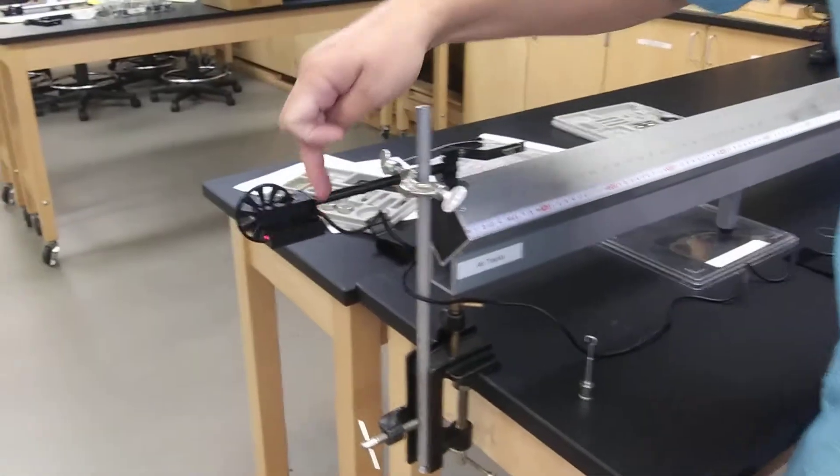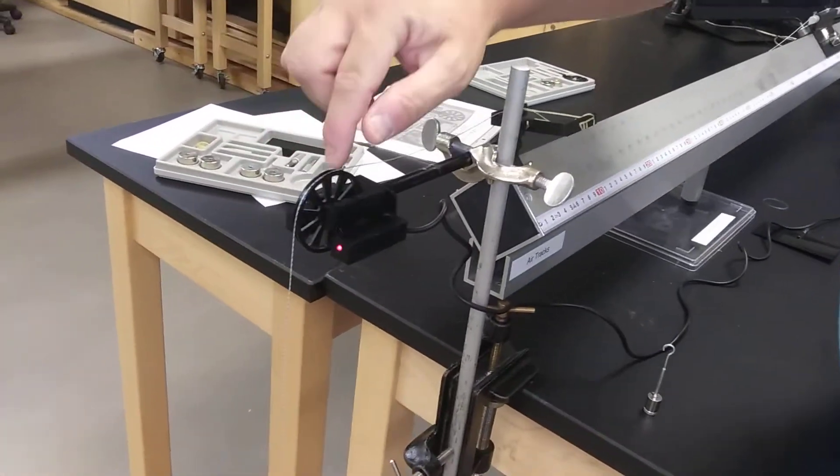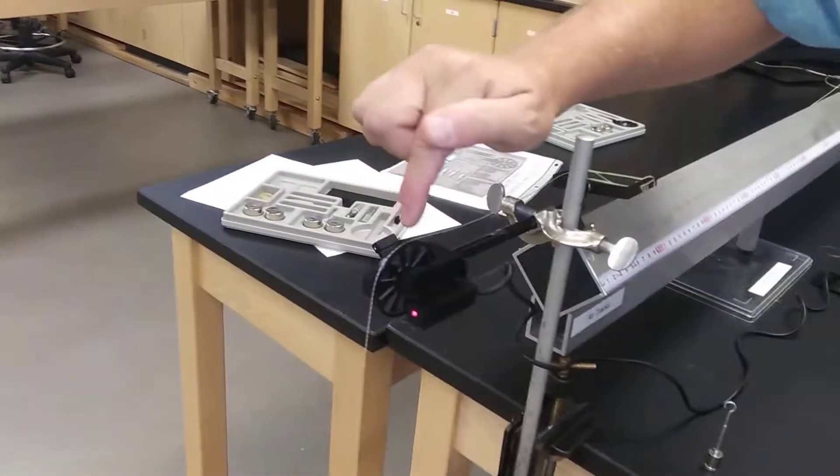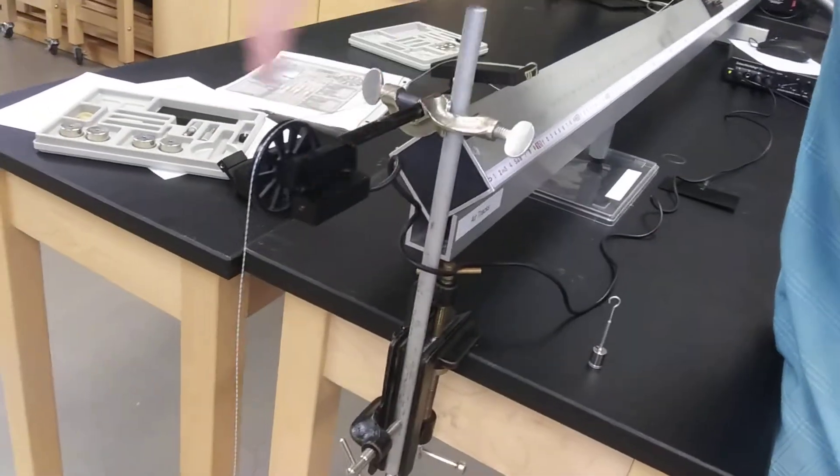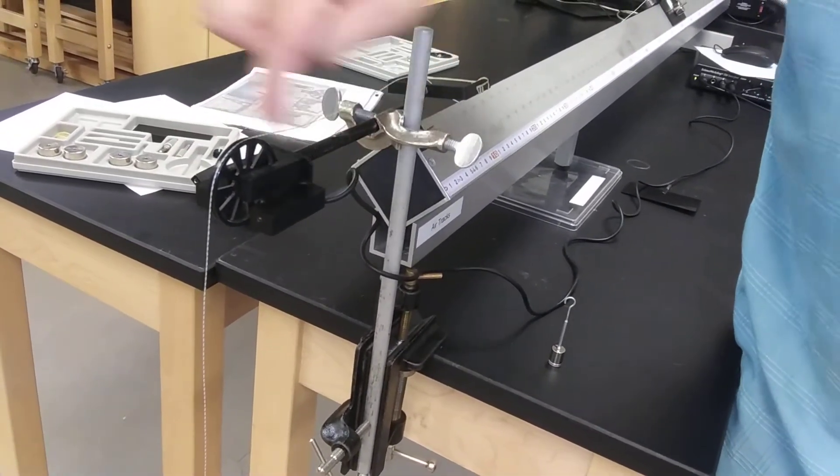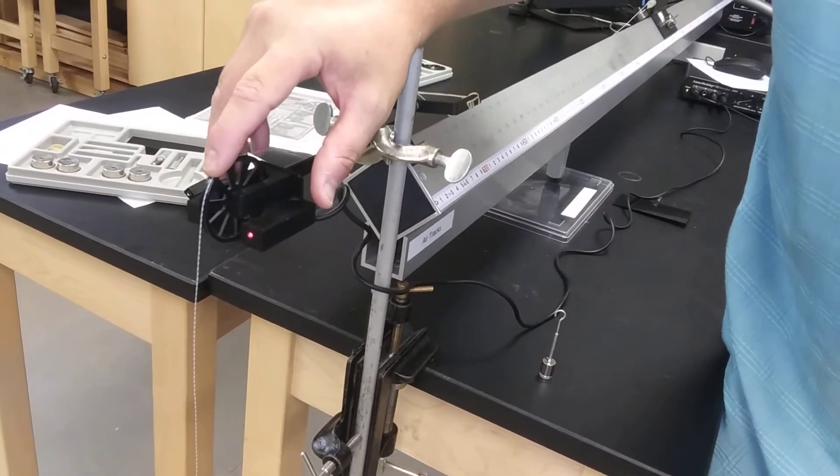This black rectangular device is a photogate. Is there a red light over there? Yes. Notice as this thing turns, these spokes are going to either block or unblock the infrared light. This is indicating right now that the infrared light that passes between there is not blocked, blocked, not blocked, blocked.